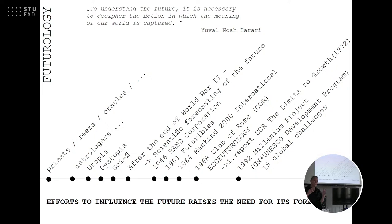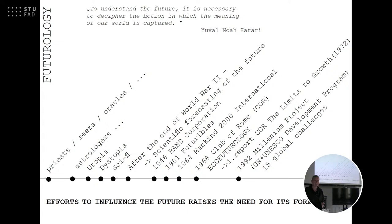The Club of Rome produces reports written by scientists from different fields. The first report, 'The Limits of Growth' in 1972, is considered the first eco-futurological study — it stated that the planet's resources are not infinite and at the rate we consume them we will run out very fast. That was 50 years ago and we haven't progressed much further; now it's almost too late and we are only beginning to take it seriously.